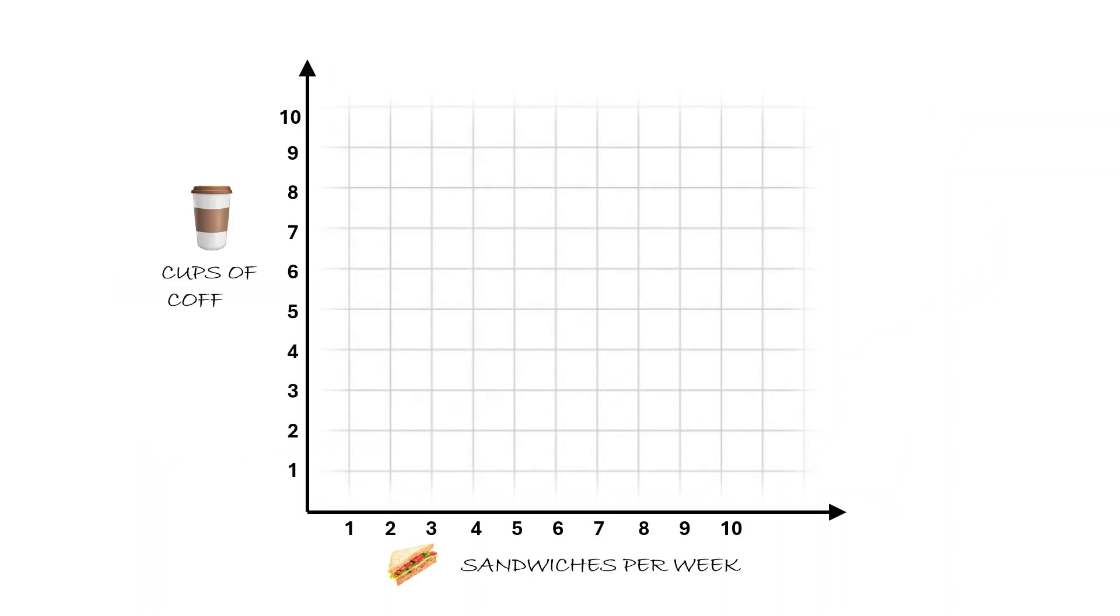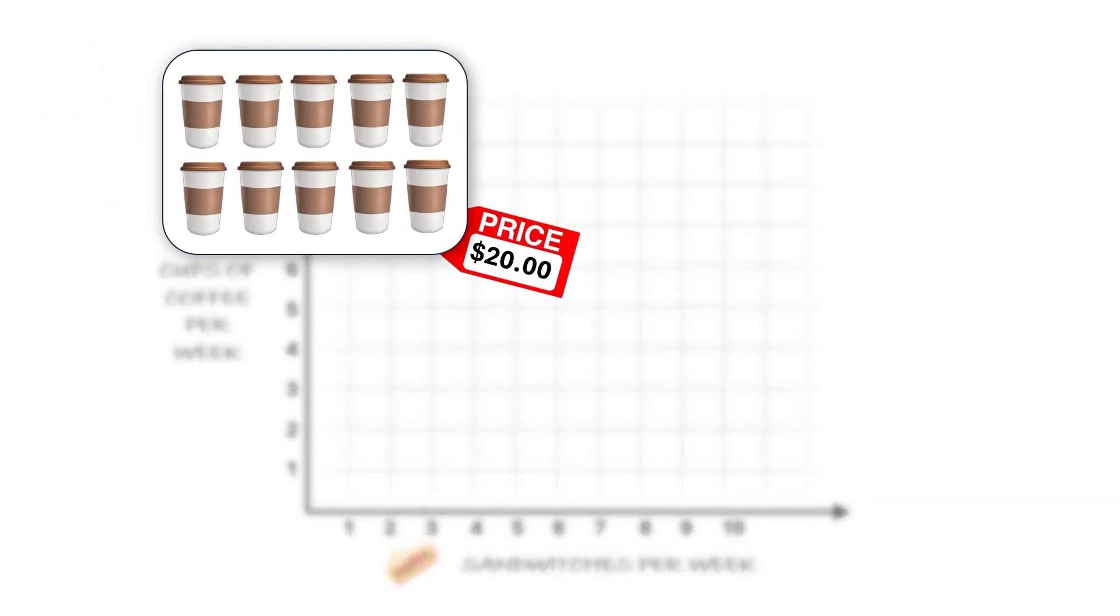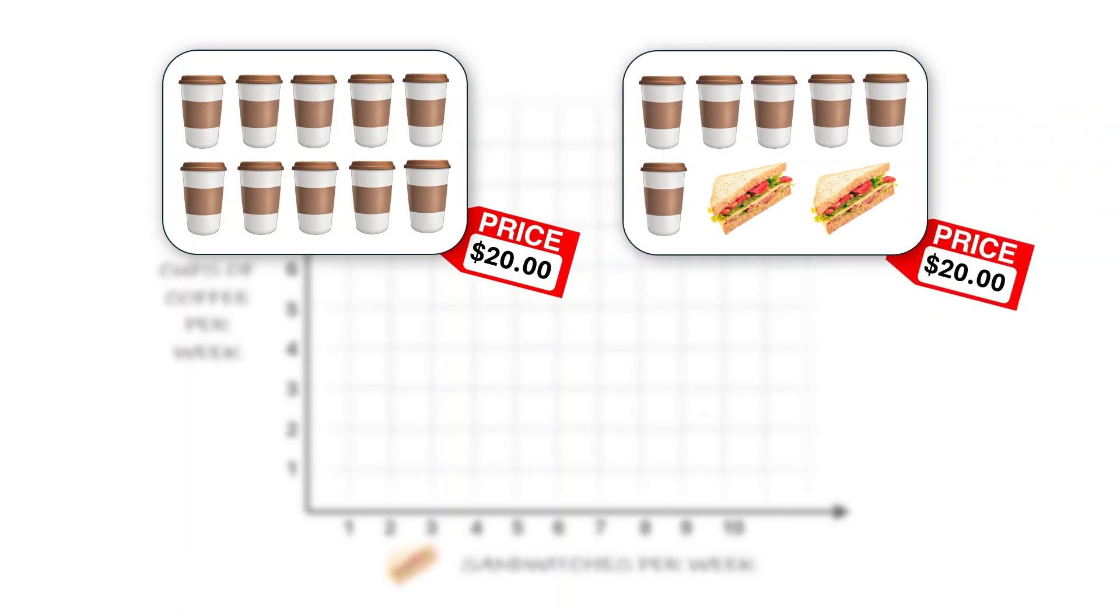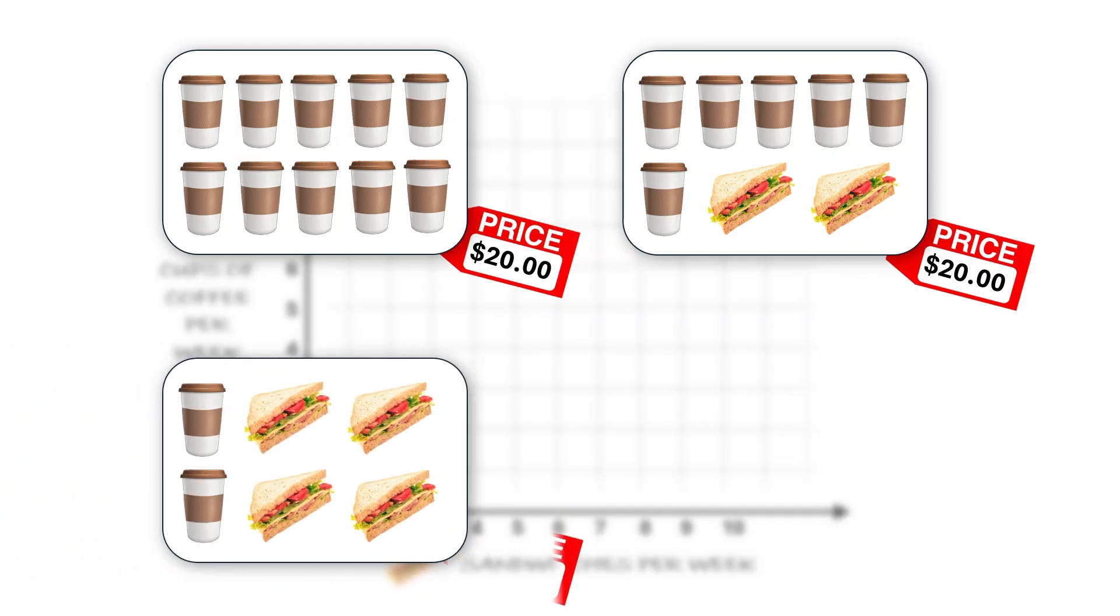Let's figure out a few combinations of coffee and sandwiches you could buy. For example, if you buy zero sandwiches, you can spend all your money on coffee and therefore buy 10 cups of coffee. If you buy two sandwiches, you have $12 left and can buy 6 cups of coffee. If you buy four sandwiches, you spend $16 and now can buy only 2 cups of coffee, and so on.